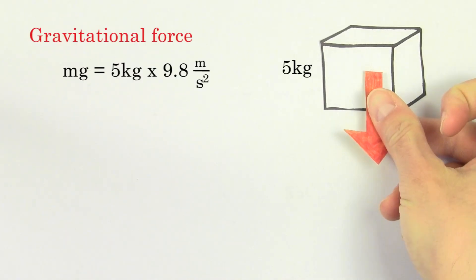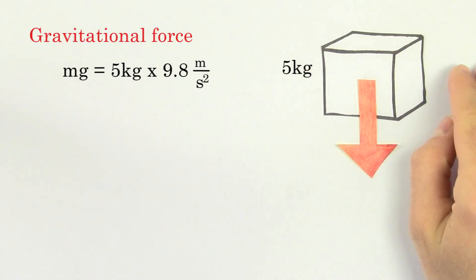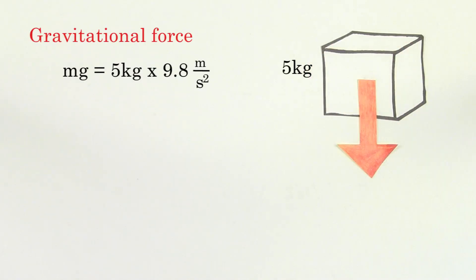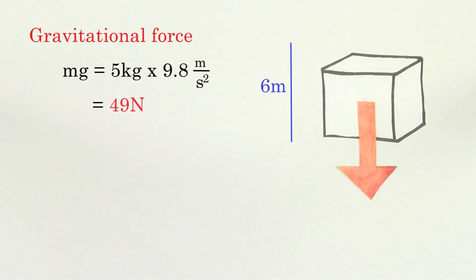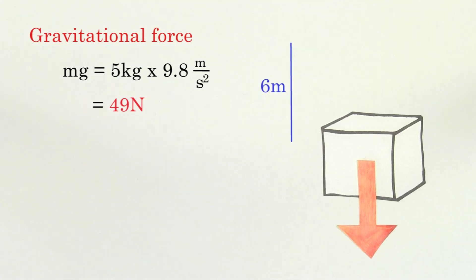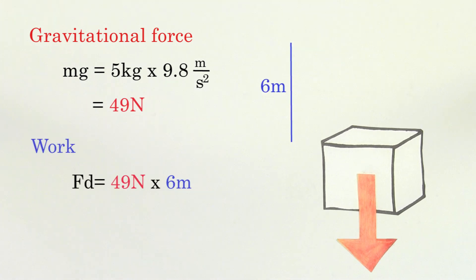For instance, the gravitational force on a five kilogram mass is 49 newtons. If the mass moves downwards by an amount of six meters, the work done by gravity is going to be 294 joules.